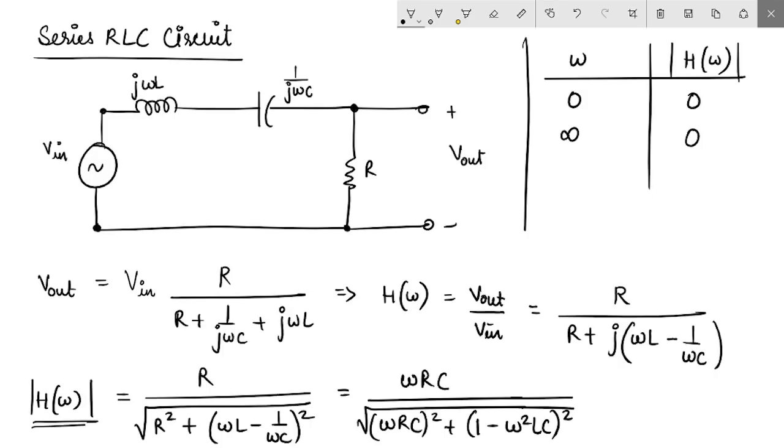Is there any value in between for omega for which magnitude actually tends to 1? If this term was actually 0, in that case, mod of H would tend to 1. So for this term to tend to 0 implies ω has to be equal to 1 upon square root LC. That means when ω is 1 over square root LC, in that case H(ω) tends to 1.